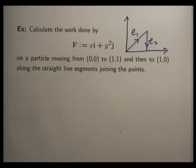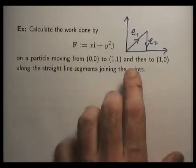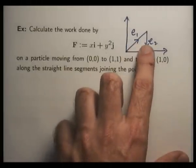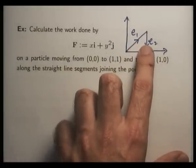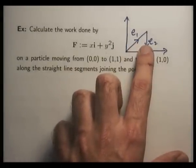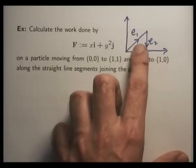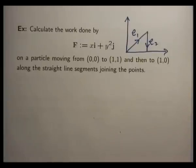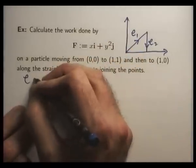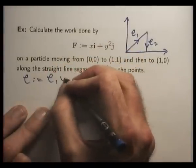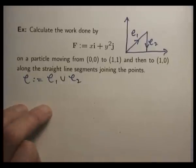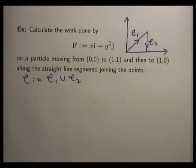So now what I have to do is choose parametrizations for C1 and C2, and then I'll separately work out the work over both of these paths, and then add the two quantities together. So here I'm going to let curly C be defined by both C1 and C2.